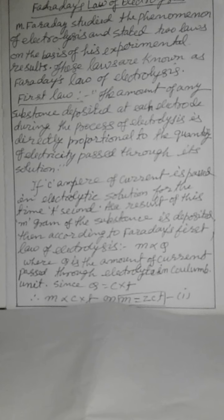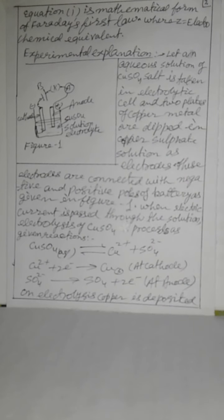M is proportional to C into T, or M equals ZCT — Equation 1. Equation 1 is the mathematical form of Faraday's First Law, where Z equals the electrochemical equivalent.